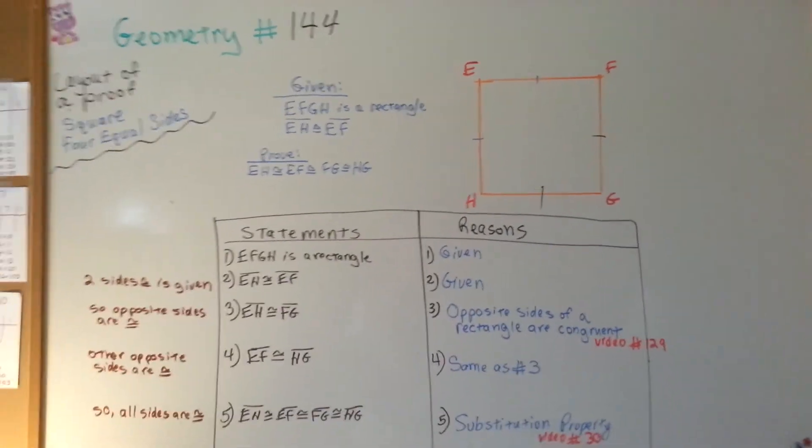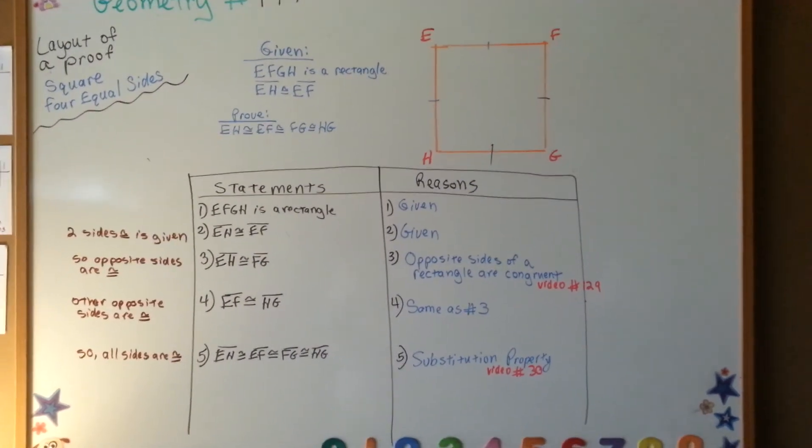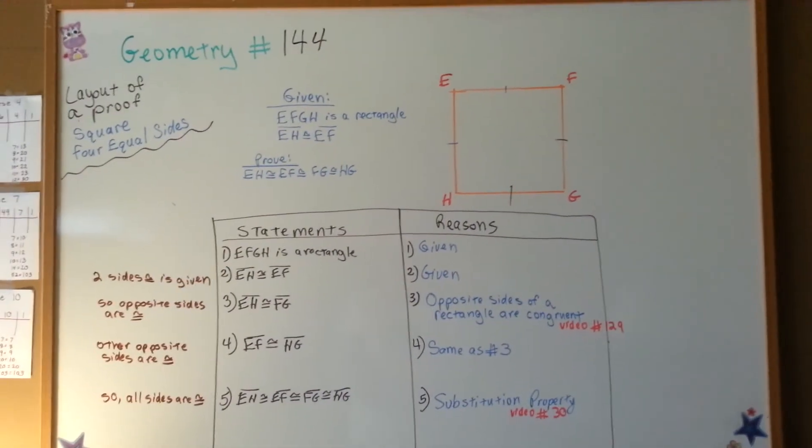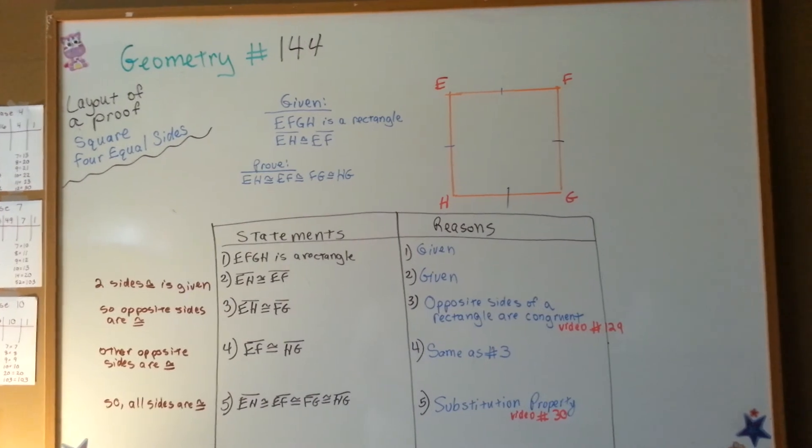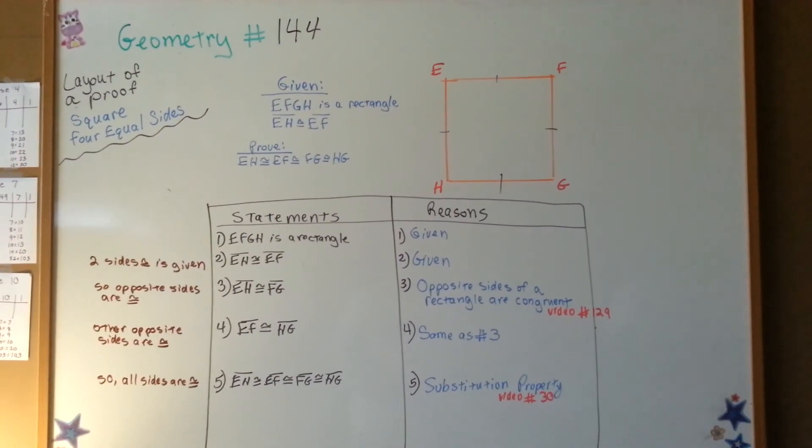So, that was a very simple proof for squares for four equal sides. My next video is going to be a rhombus with right angles is a square proof. I hope to see you there.